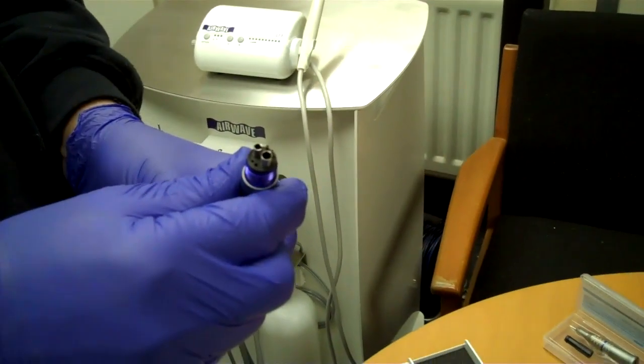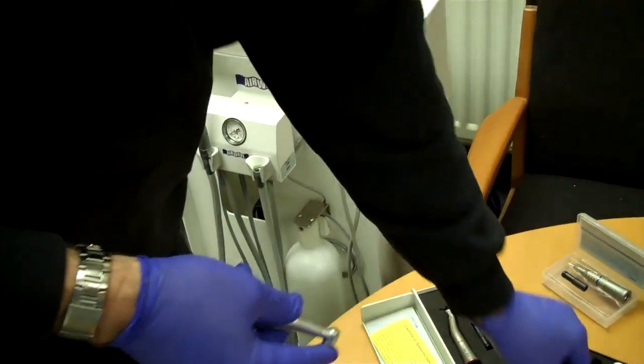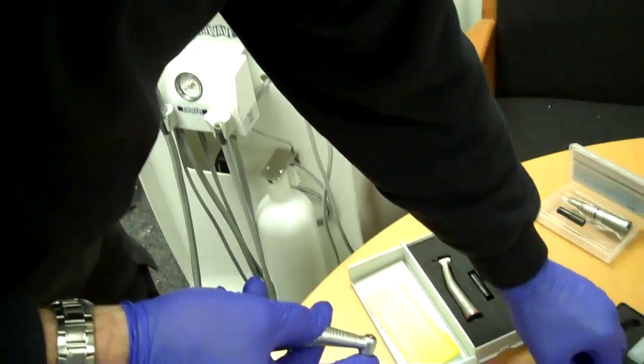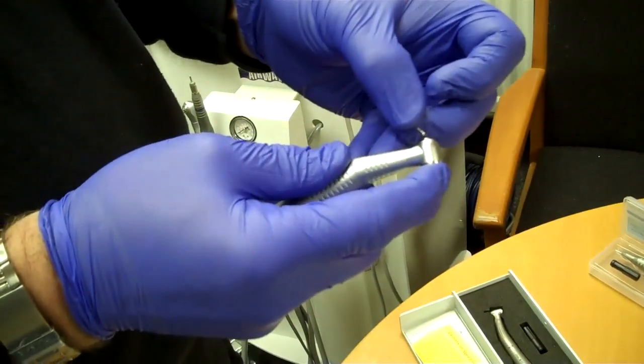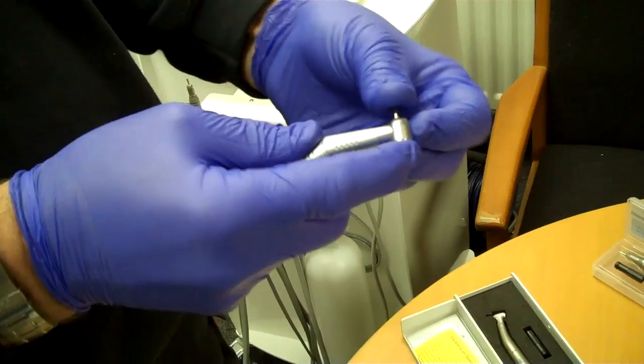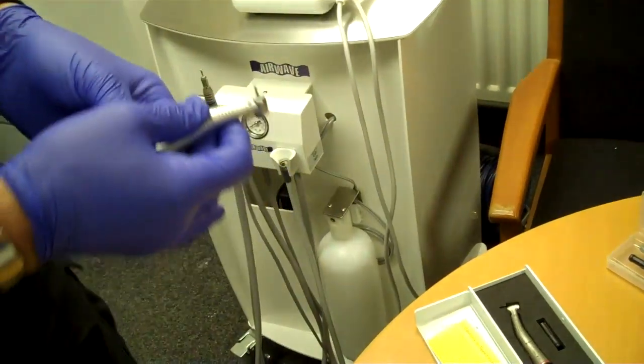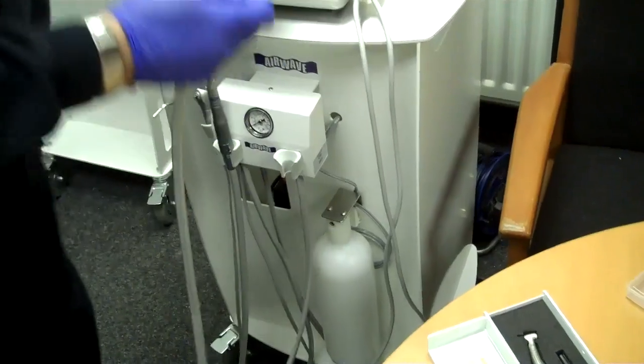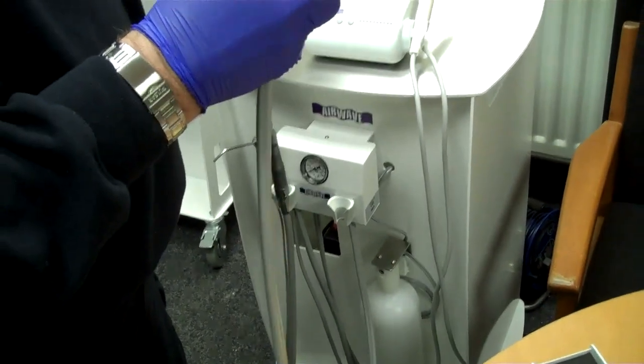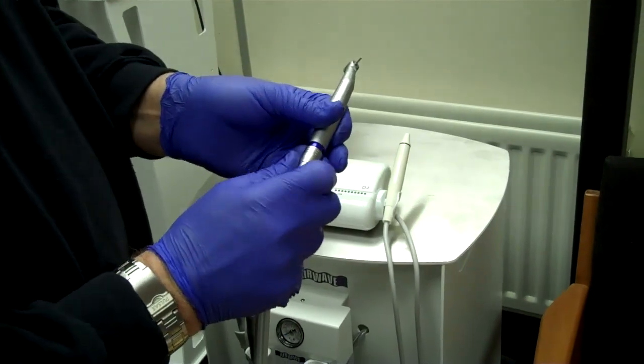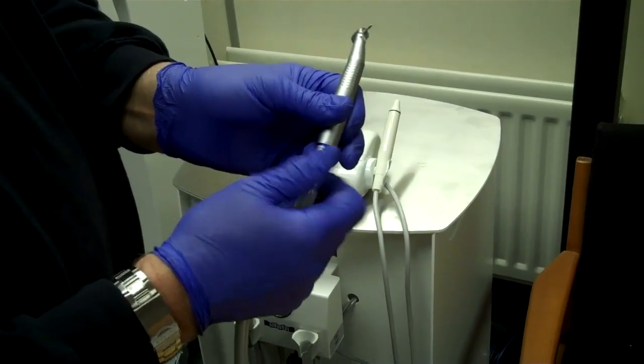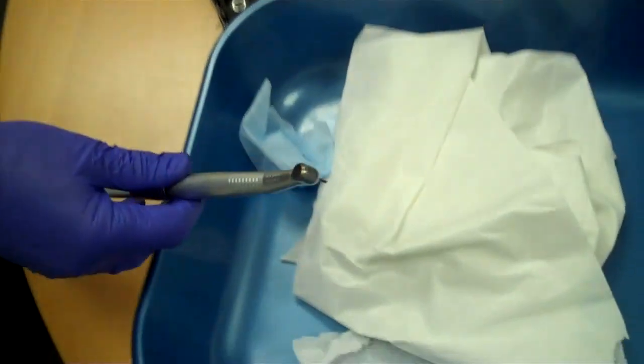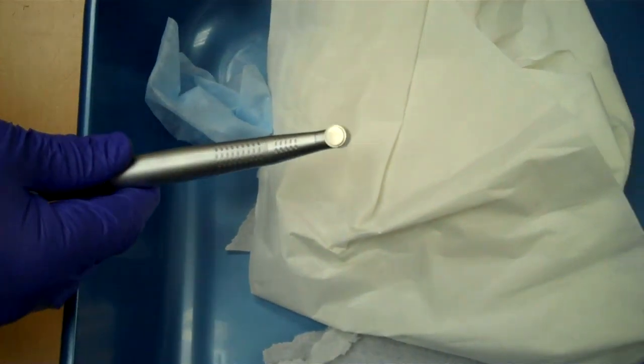The next thing we need to do is replace the burr because we're now going to purge this. Put the airline back in to make sure the oil is through the system and into the cartridge head. Now we will just run that for about 20 to 30 seconds.